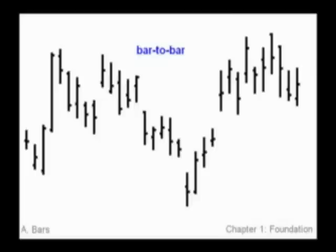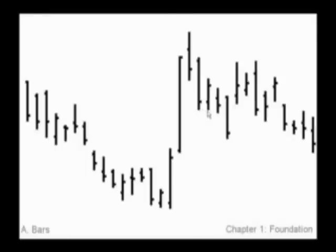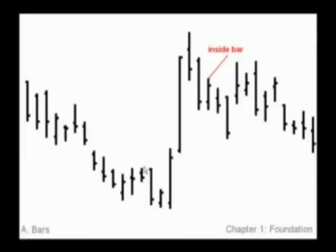We may also have what's known as an outside bar. This last bar here is an outside bar. An outside bar, of course, has its range outside of the previous bar's range — it has a higher high and a lower low. These two bars have the exact same low, but the second bar has a lower high. That little bar qualifies as an inside bar. There are also two bars down here with the exact same high; the longer bar has a lower low, making it a legitimate outside bar.